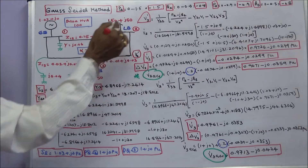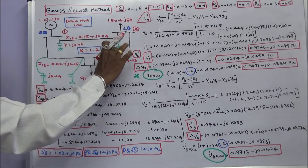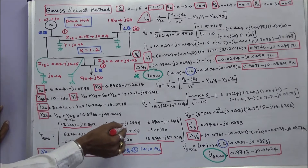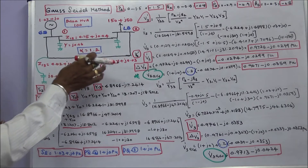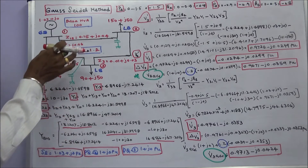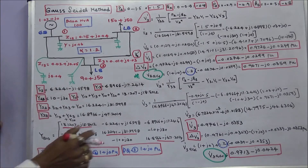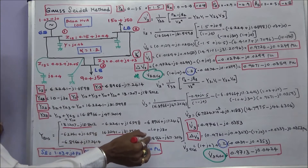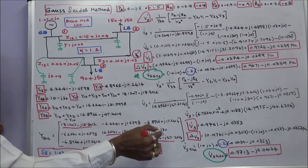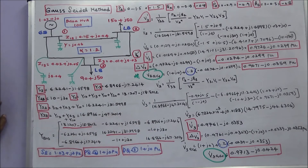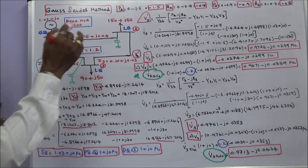Y22 is equal to its admittances plus half-line charging admittance. Y33 is equal to its admittances plus half-line charging admittance, giving Y33 equal to 16.81066 minus j47.2014. These are the diagonal elements. We also have to calculate the off-diagonal elements, completing the Y-bus matrix of the system.